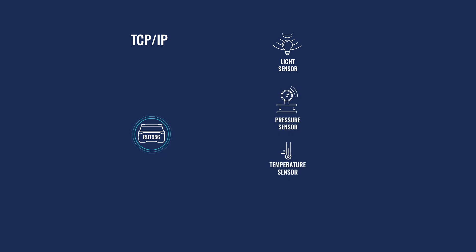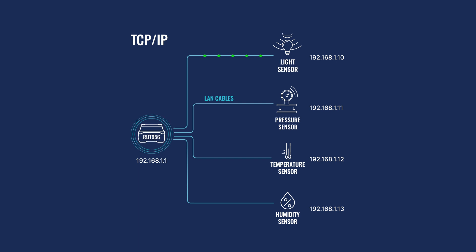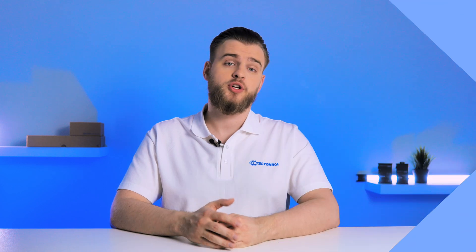To better envision how the Modbus TCP protocol works, let's look at an example. Imagine a router serving as a Modbus TCP client and four sensors functioning as Modbus TCP servers connected via LAN Ethernet cable. Both the router and sensors utilize IP addresses to recognize each other within the same network. The router establishes connections with the sensors and requests data based on predefined configuration, such as requesting light sensors to transmit data hourly while the pressure sensor sends its data every two hours.